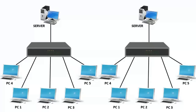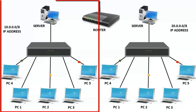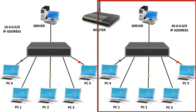Let's take another example. Here network1 is assigned with the IP address 10.0.0.1 with the CIDR value /8, and network2 is assigned with the IP address 20.0.0.1 with the CIDR value /8.